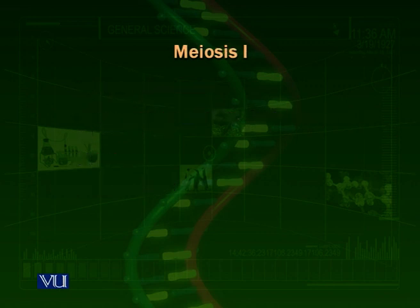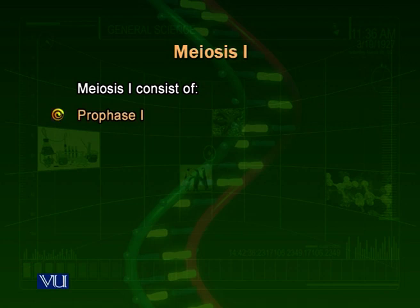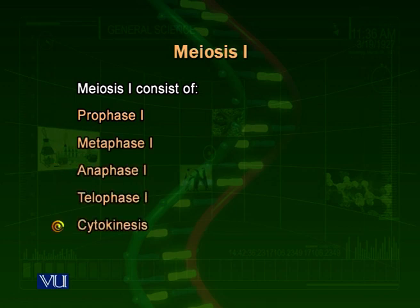Meiosis 1 consists of prophase 1, metaphase 1, anaphase 1, telophase 1, and cytokinesis. When the nuclear division is complete the cell divides into two by cytokinesis, and when it is almost divided it starts its next phase of division called meiosis 2. Meiosis 2 is just like mitosis — it simply divides both cells into the same type of cells with equal number of chromosomes.